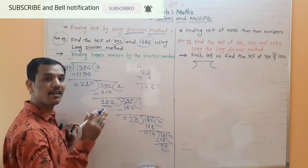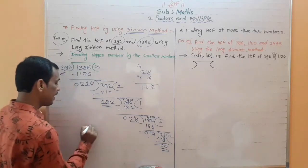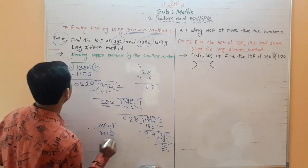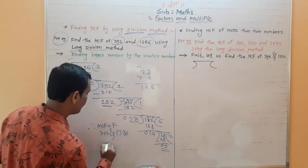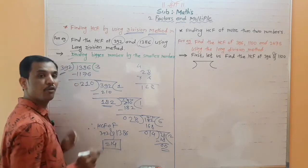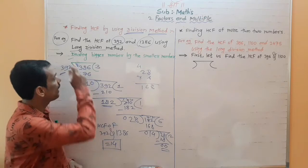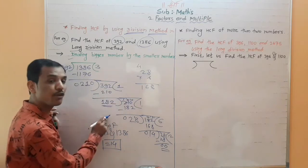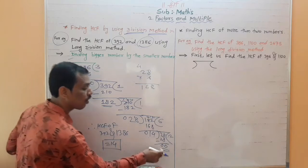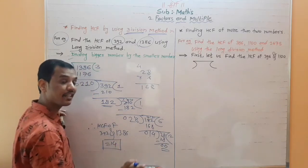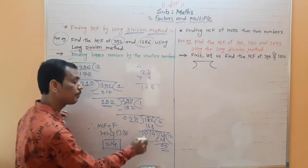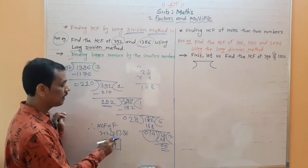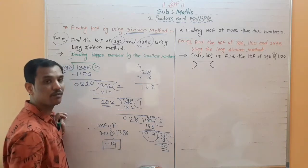The remainder is 0, and this number is your final answer — that is your HCF. Therefore, HCF of 392 and 1386 is equal to 14. This technique is very easy. You just need to keep dividing; after each remainder comes, use it as the new divisor. When you get remainder 0, the last divisor is your HCF. You can make a box around that answer.